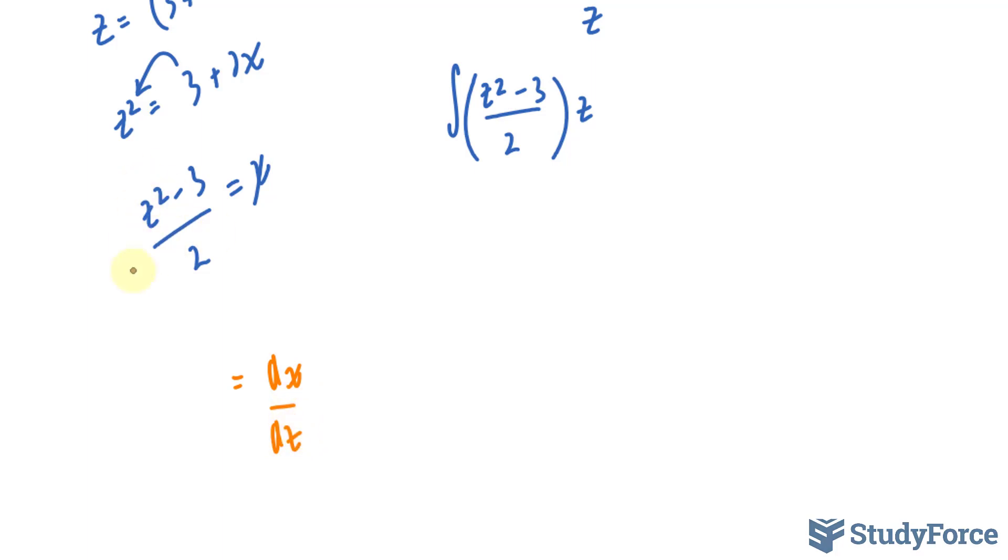And the derivative of this expression isn't hard to do. In fact, we can rewrite this as z to the power of 2 over 2 minus 3 over 2. If we use the power rule for this term, we should end up with simply z, and if we use the power rule for this term, we should end up with 0.